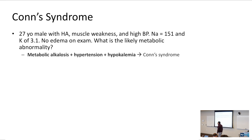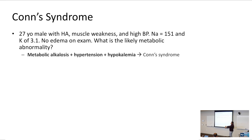Metabolic alkalosis is going to be related to aldosterone making you pee out hydrogen ions, and thus you have metabolic alkalosis. Hypertension because increased amounts of aldosterone brings in sodium. You get hypokalemia because not only do you bring in sodium, but you pee out potassium and hydrogen ions.